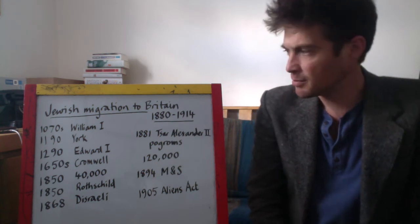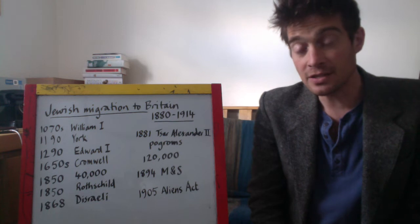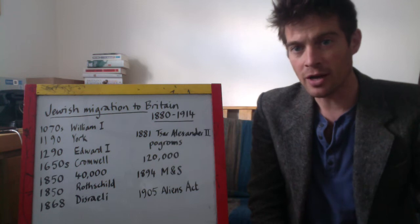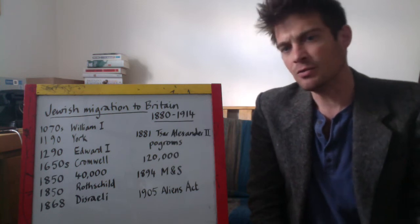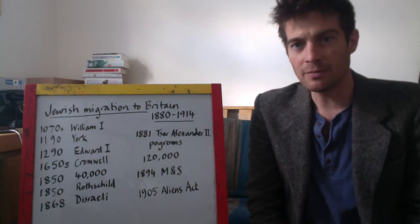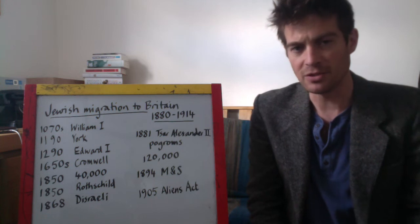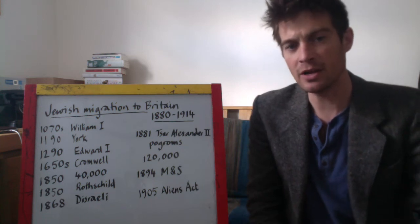The first point on the timeline, in the 1070s, is something we've already learnt about. William the Conqueror — William I — when he was King of England, invited Jewish moneylenders over from Normandy to come and live in England, which gave a big boost to the economy. So Jewish moneylenders were invited over by William I.